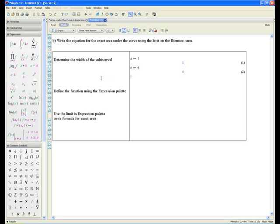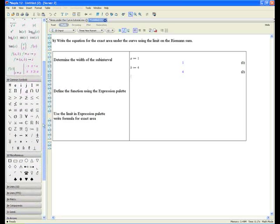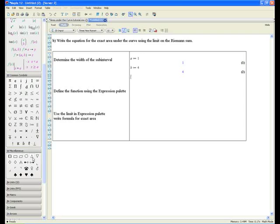That's how we define a constant. And the upper limit was b equals 4. And the sub interval width can be denoted by delta x. And the delta we get from the miscellaneous palette. So click on delta x colon equals 1 over n. And in brackets, type b minus a. Enter.